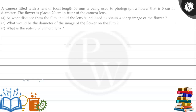Hello everyone, let's read this question. A camera fitted with a lens of focal length 50 millimeter is being used to photograph a flower that is 5 centimeter in diameter. The flower is placed 20 centimeter in front of the camera lens. First question: at what distance from the film should the lens be adjusted to obtain a sharp image of the flower?